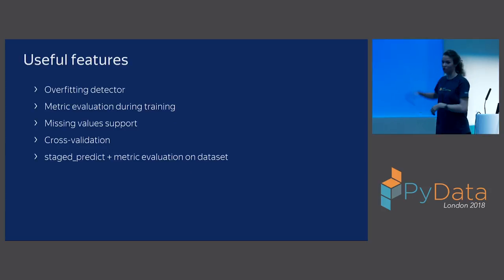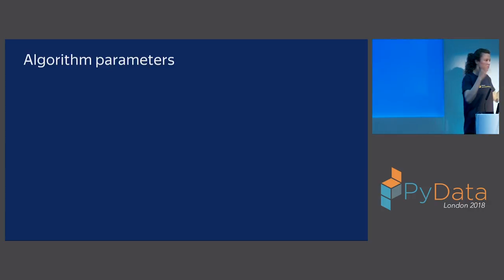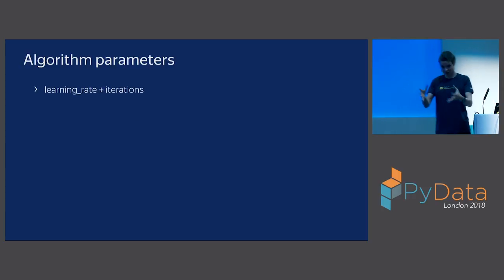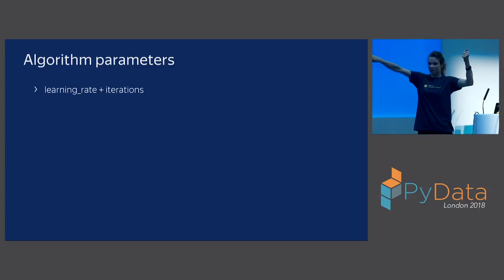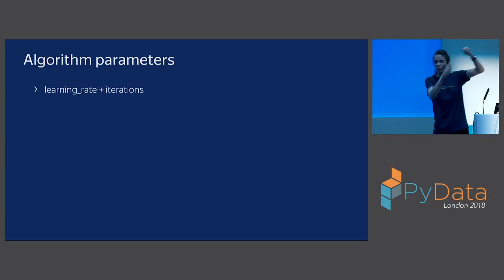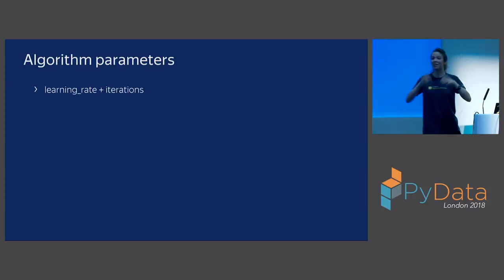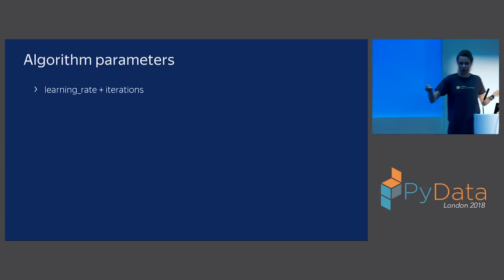Now about the parameters important for quality. First is the number of iterations — you need to tune this always for all gradient boosting libraries. The validation error reduces and then starts growing; you need to find this moment and wait for convergence. People often stop too early. Second is the learning rate — the lower the learning rate, the better the quality, but the more iterations you need for convergence. At some point decreasing the learning rate further stops improving quality.